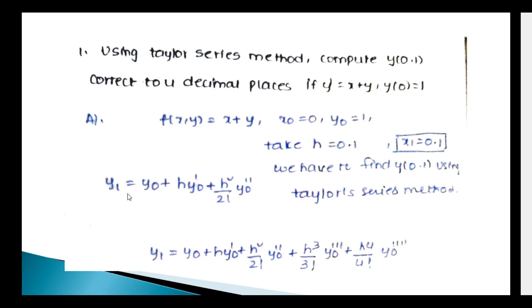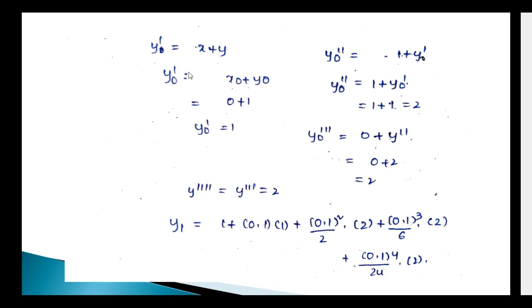We have to find the value of y(0.1) using the Taylor series formula: y₁ = y₀ + h·y₀' + (h²/2!)·y₀'' + (h³/3!)·y₀''' + (h⁴/4!)·y₀''''. First find y₀': y₀' = x₀ + y₀ = 0 + 1 = 1. Next, y₀'' = 1 + y₀' = 1 + 1 = 2.